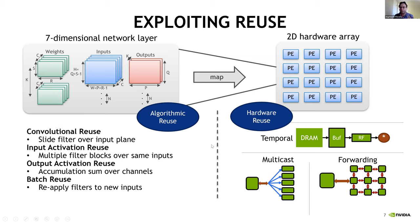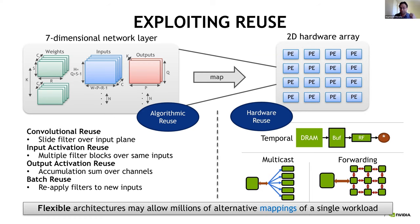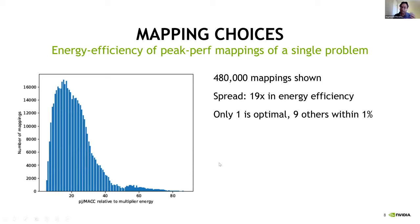A natural question is: how many ways can we transform algorithmic reuse into hardware reuse? It turns out that for flexible accelerator architectures, there are actually millions of alternative mappings of a single workload onto a single architecture. Are these mappings interesting or are they all silly permutations? A motivational experiment on one workload and one architecture — varying only the mapping — shows that yes, it does matter.